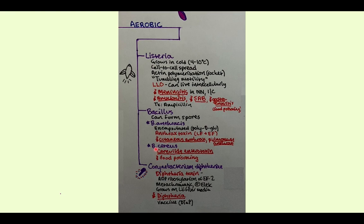Our next video will be B. cereus. They are very similar as far as their classification and characteristics, but they couldn't be any more different as far as the diseases that they cause. B. anthracis causes anthrax, and that can be deadly — particularly pulmonary anthrax. B. cereus causes run-of-the-mill food poisoning from Chinese restaurants, so that's pretty benign. But B. anthracis is no laughing matter.